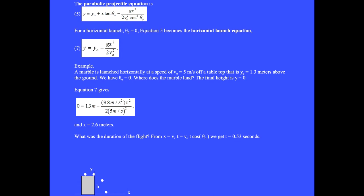We have θ₀ equals 0. The initial height y₀ is 1.3 meters and the final height is y equals 0. Where does the marble land? Equation 7 gives x equal 2.6 meters. What was the duration of the flight? From the x motion, we get t equals 0.53 seconds.